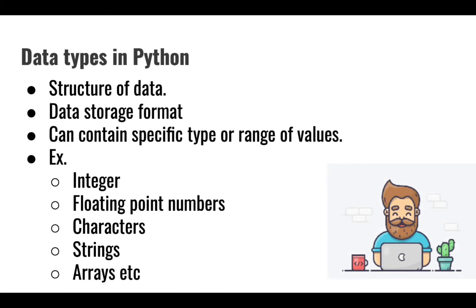Data types in Python. A data type is simply a structure of data. It is a data storage format that can contain a specific type or range of values. Some commonly used data types include integer, floating point numbers generally known as float, characters, strings, array, and many more.